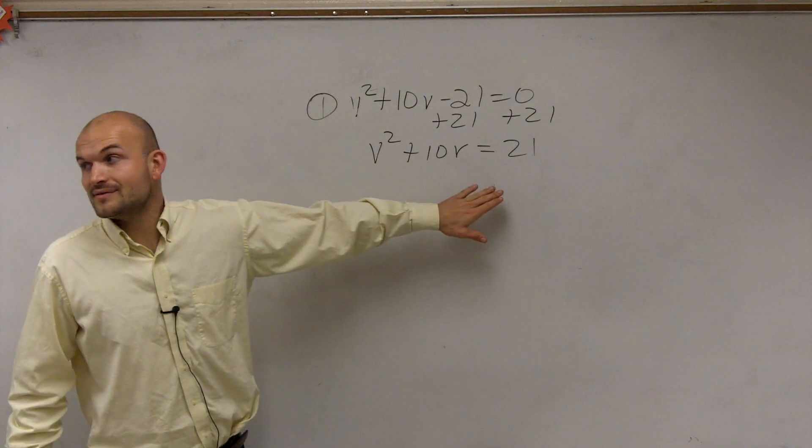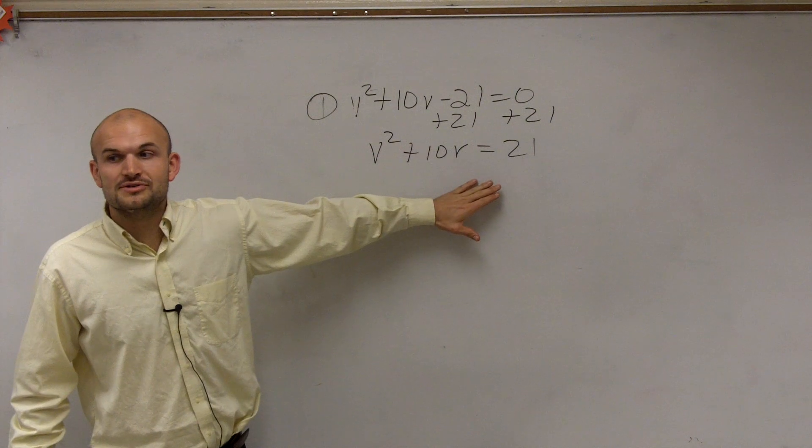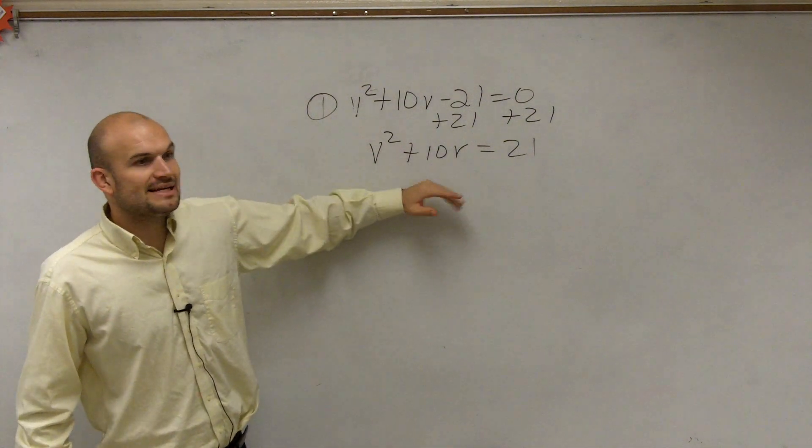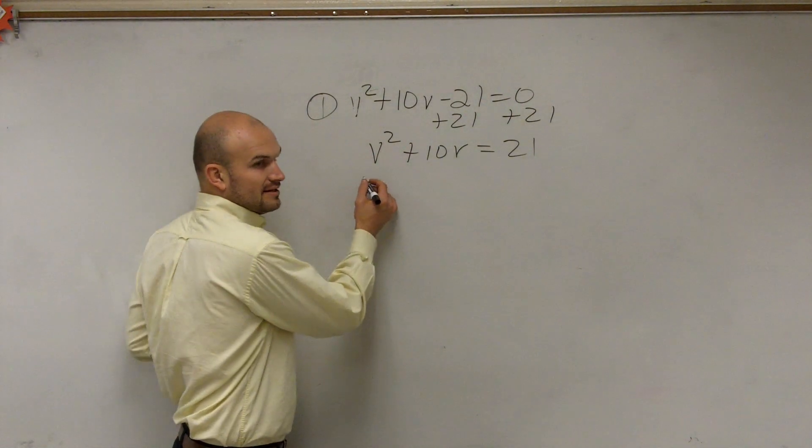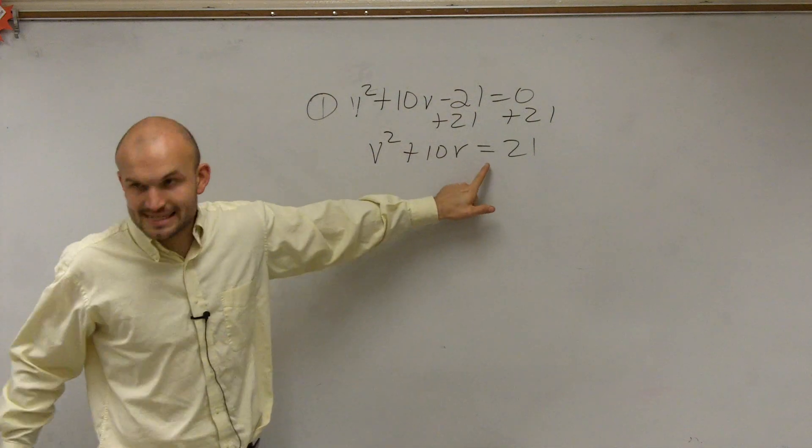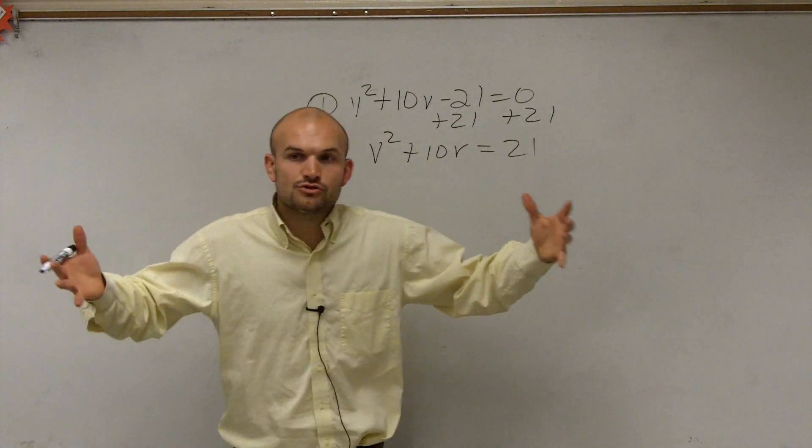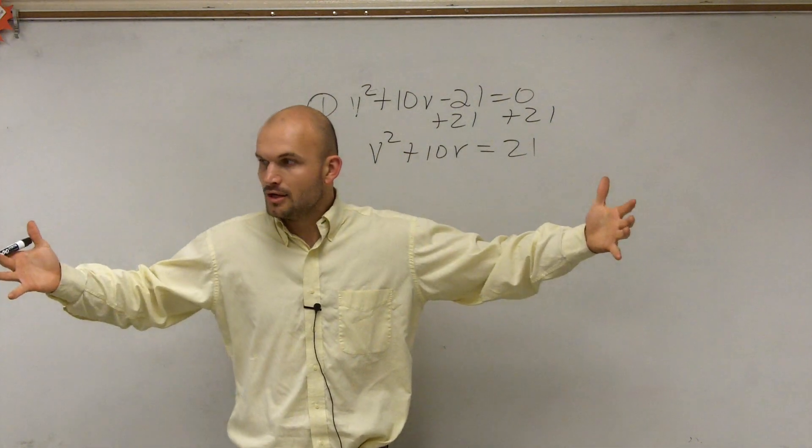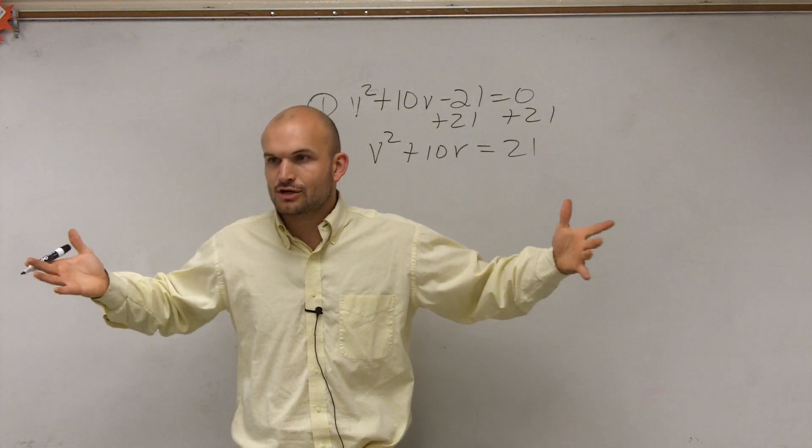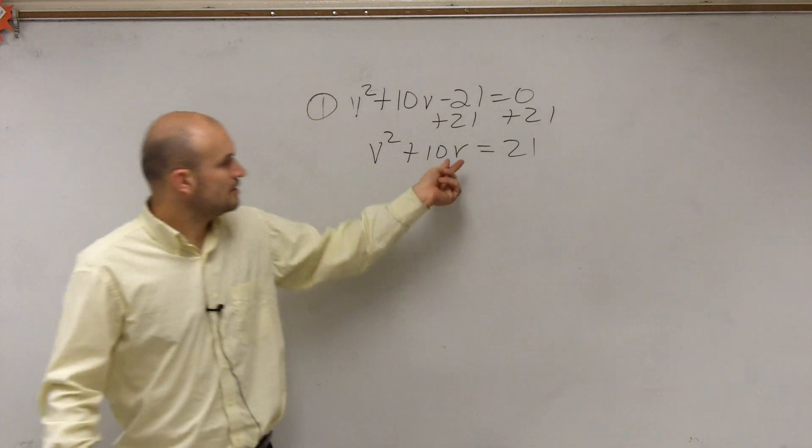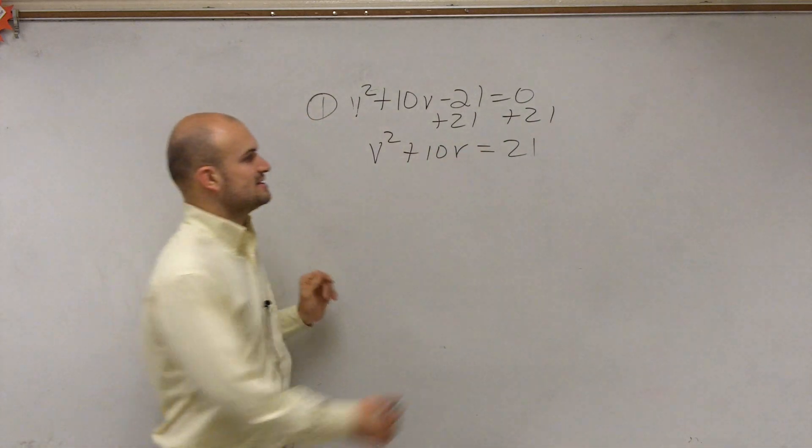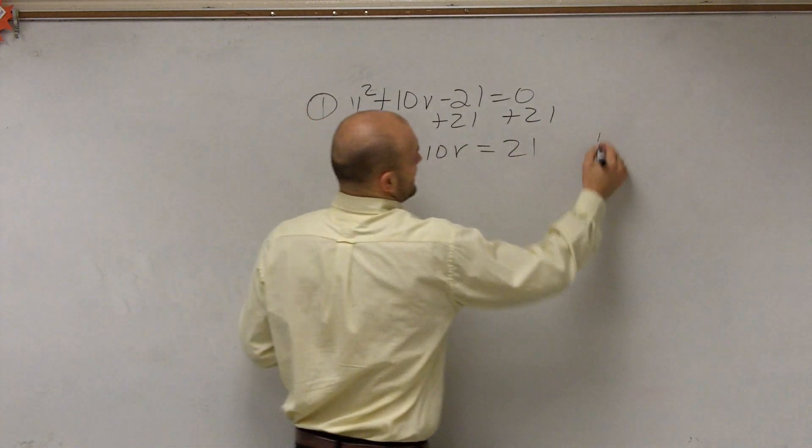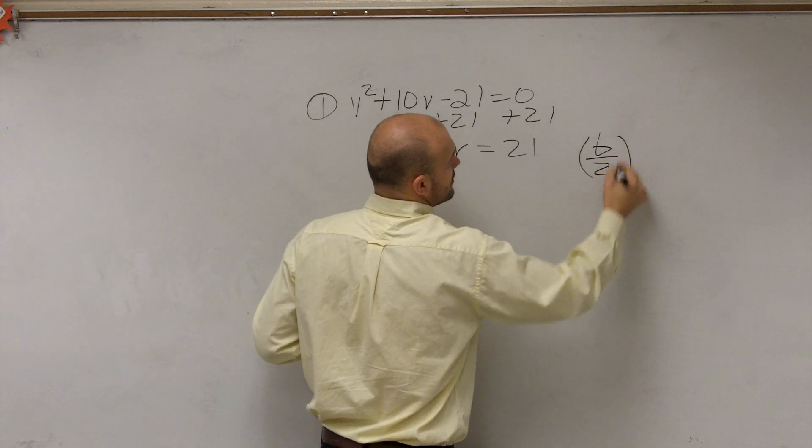So now, the next thing that you're going to do is we need to now find our value C. There is no value C there, but what we want to do is we need to create a perfect square trinomial. That's what we were doing when we were doing the find the value C that creates that perfect square trinomial. We got 25.